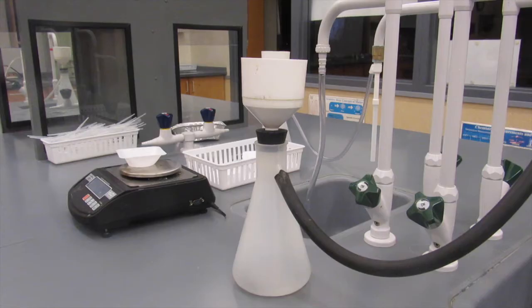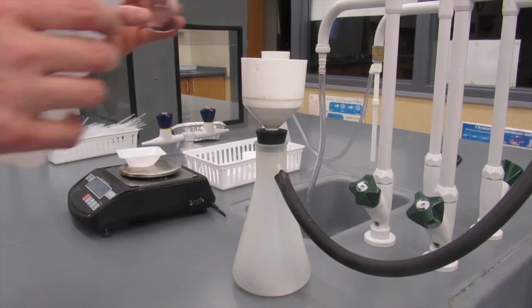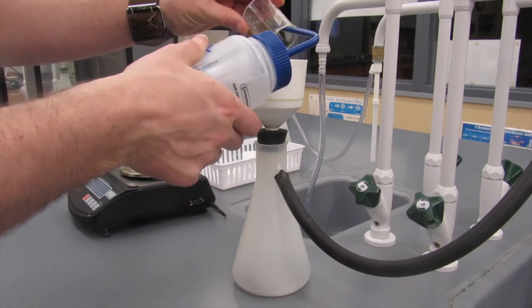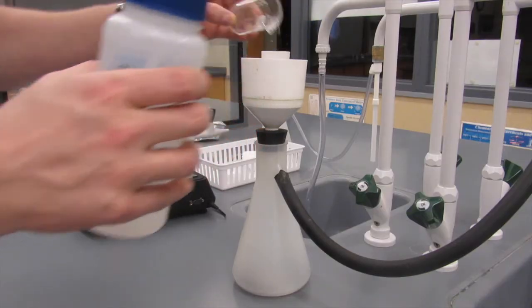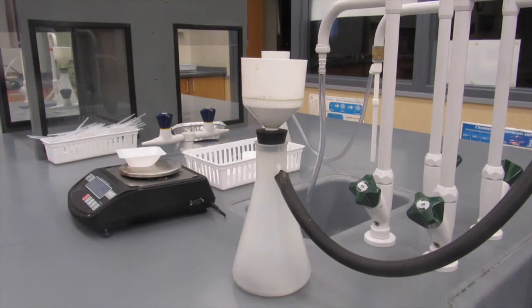Our copper solution is then dumped into the Buechner funnel, which is on top of the filter flask, and then rinsed briefly with water to get all of the copper that's off the sides of the beaker.